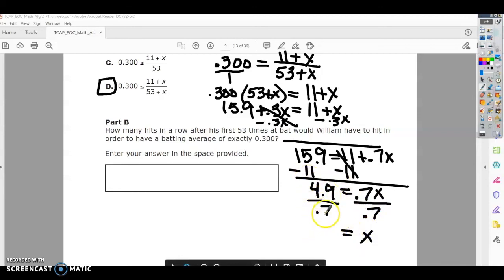It says how many hits in a row after his first 53 times at bat would William have to hit in order to have a batting average of exactly 0.3. Since X was the number of times we added bats and we solved for X, that means 7 is your answer.